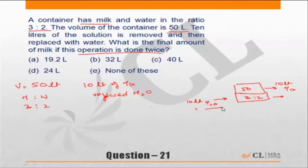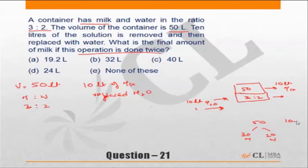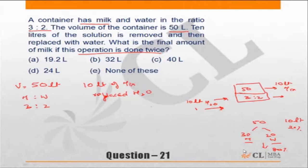Since you are introducing water, you should work on the basis of milk. This mixture had 50 liters, out of which originally 30 liters were milk and 20 liters were water. When you remove 10 liters of this mixture, you are removing 20% of the mixture, so the quantity of milk and water both come down by 20%. You will be left with 80% — that is, 80% of 30 gives 24 liters of milk, and 80% of 20 gives 16 liters of water.